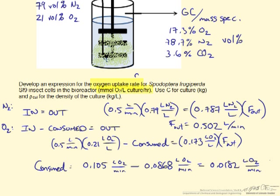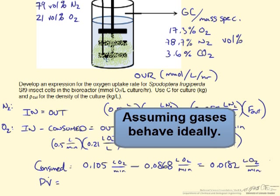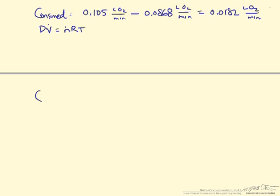If you look at the question, we want an oxygen uptake rate in millimoles per liter per hour. So this is where we are going to use the ideal gas law. Since the ideal gas law allows us to convert a volumetric flow rate to a molar flow rate. So if we use the ideal gas law and plug in the values we know, this is all at one atmosphere, we have a volumetric flow rate of 0.0182 liters per minute.